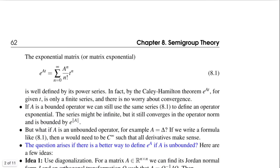Here's one idea. We could write the sum representation of the exponential. So e to the At is sum, n equals zero to infinity, A to the n divided by n factorial, t to the n. Now if A is a matrix, then this is actually a finite series by the Cayley-Hamilton theorem. And so there's no issue about convergence.